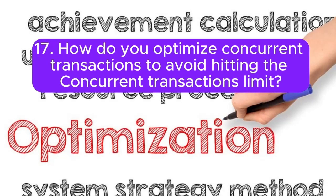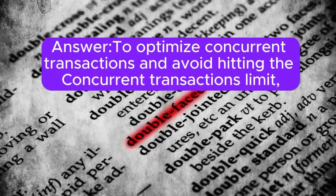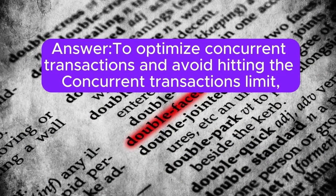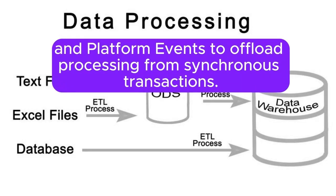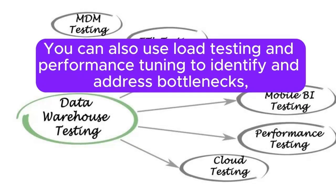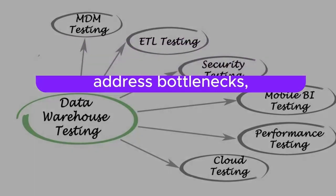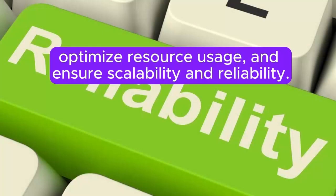Question 17: How do you optimize concurrent transactions to avoid hitting the concurrent transactions limit? Answer: To optimize concurrent transactions, you can implement asynchronous processing techniques such as Batch Apex, Queueable Apex, and platform events to offload processing from synchronous transactions. You can also use load testing and performance tuning to identify and address bottlenecks, optimize resource usage, and ensure scalability and reliability.